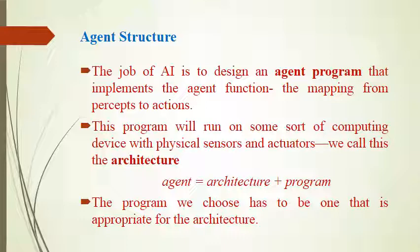The job of AI is to design an agent program that implements the agent function — the mapping from percepts to actions. The agent program implements the agent function, mapping perception to actions. This program runs on some sort of computing device with physical sensors and actuators, and all of this together is called the architecture.